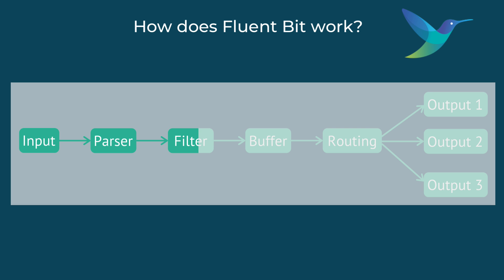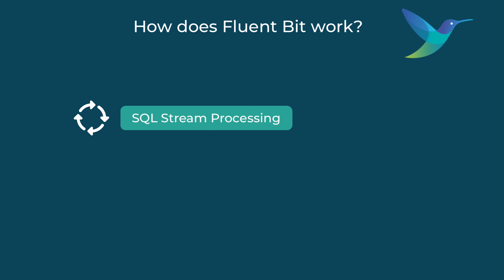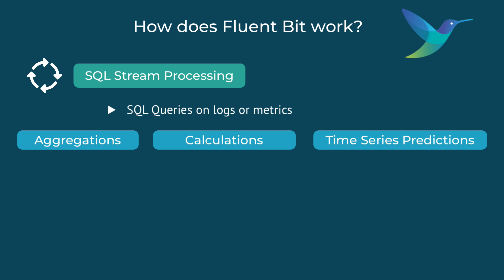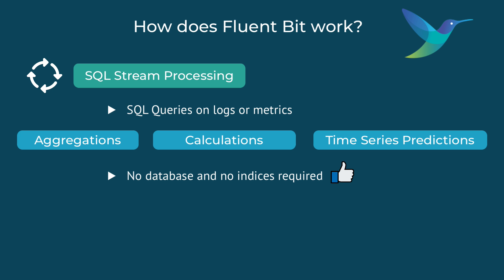In addition to all of this, one unique advanced feature that FluentBit has is SQL stream processing. This allows users to write SQL queries on the logs or metrics to do aggregations, calculations, and even time series predictions. This is super useful if you need to calculate an average, max, or min before sending the data to storage, or count the number of times a message appears, or aggregate data to reduce data costs. The best part is that no database or indices are required — everything runs on the same lightweight, high performance process, so you still keep that efficiency of FluentBit.